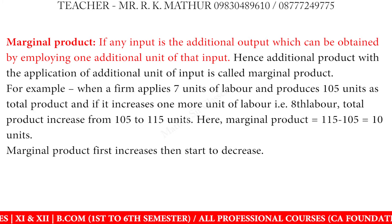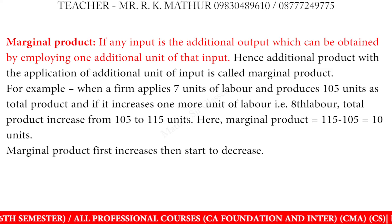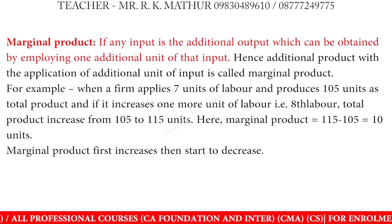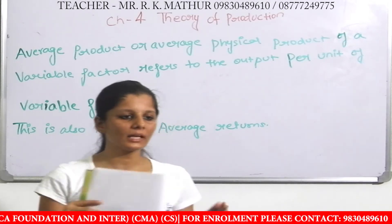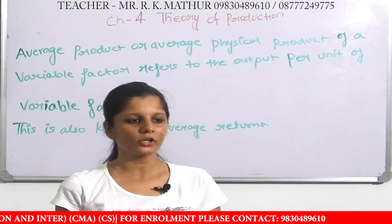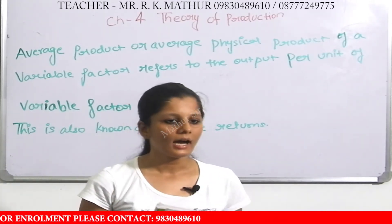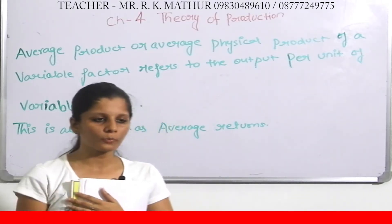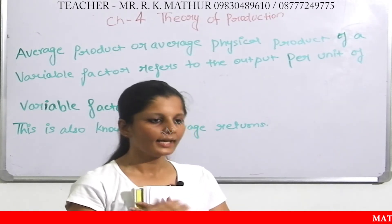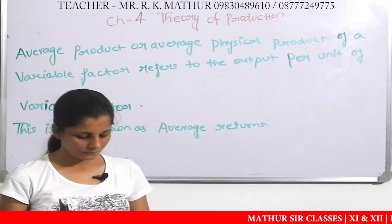Marginal product: marginal means additional. If any input is added, the additional output which can be obtained by employing one additional unit of that input is the marginal product. When we add additional input, we get additional output — that additional output is the marginal product.